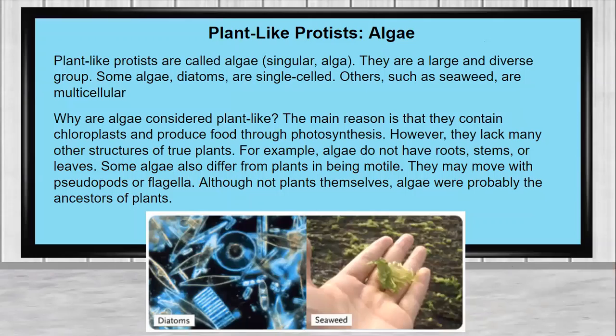Now here is how protists are plant-like, and we're going to talk about algae. Plant-like protists are called algae. They are a large and diverse group. Some algae, like diatoms, are single-celled — those are ones you're going to have to use a microscope to see. Others, such as seaweed, are multicellular and you're able to see seaweed without a microscope.